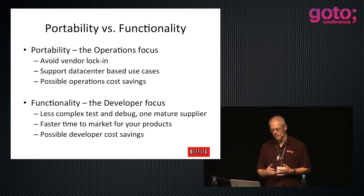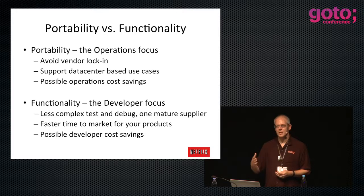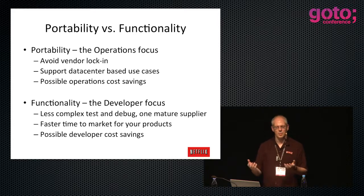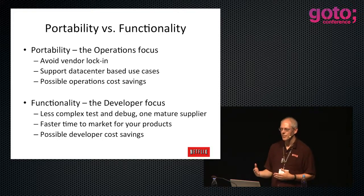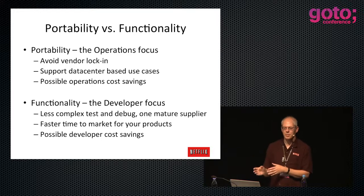Operations people are always worrying about vendor lock-in, data center use cases, and cost savings because it's simple to measure cost. Developers are more focused on getting stuff done quickly. If you have one mature supplier, there's less complex test and debug - you have to test everything twice if you've got two suppliers. It means faster time to market, and your cost savings come in developer time.